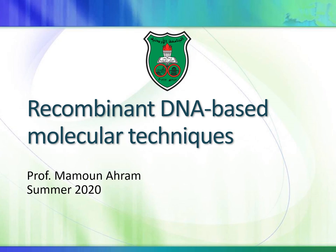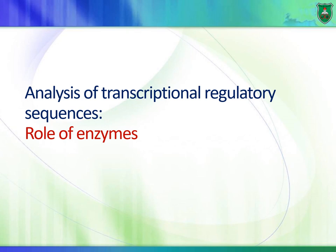Using genetic engineering and restriction endonucleases, we can integrate different pieces of DNA, creating recombinant DNA. So here, the question is: how can we determine which sequence of DNA is important for transcription? In this technique, we'll be talking about how we can determine which sequence is important for transcription of a certain gene.